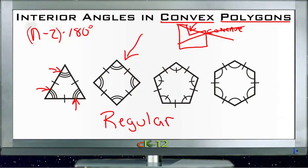And what that means is you take the number of sides, n, n equals the number of sides, you subtract two from it, and then you multiply the answer by 180. And we can take a look at these basic shapes here and see how that works.